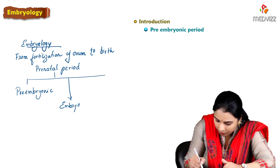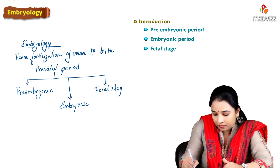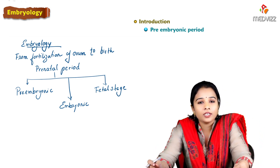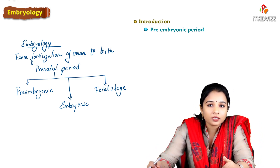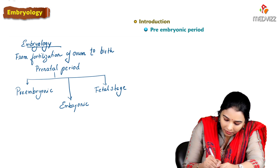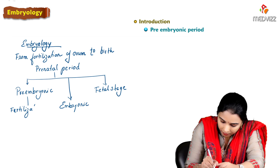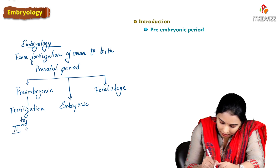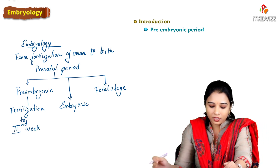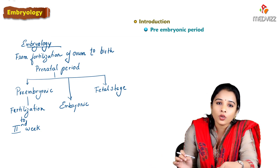The three parts of the prenatal period are: the preembryonic period, the embryonic period, and the fetal stage. The preembryonic period extends from fertilization until the second week of gestation. During the preembryonic period, we see the development of the conceptus.